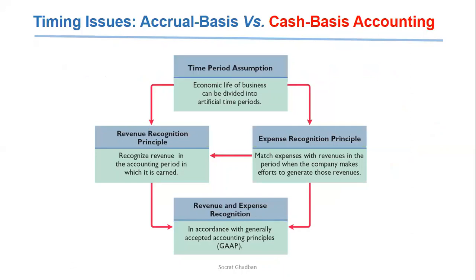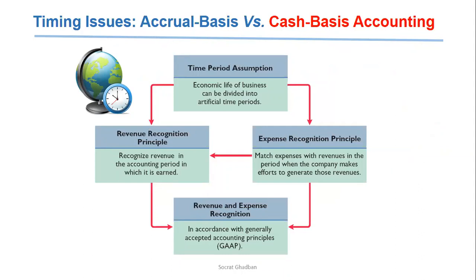The time period assumption states that the economic life of a business can be divided into artificial time periods, generally a month, a quarter, or a year.